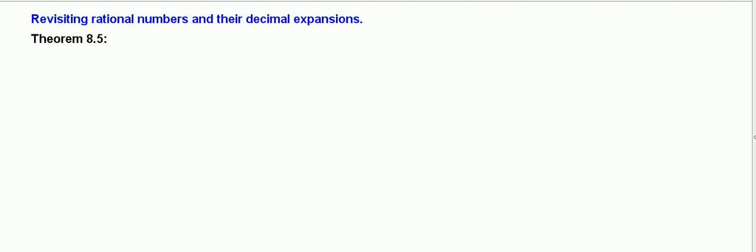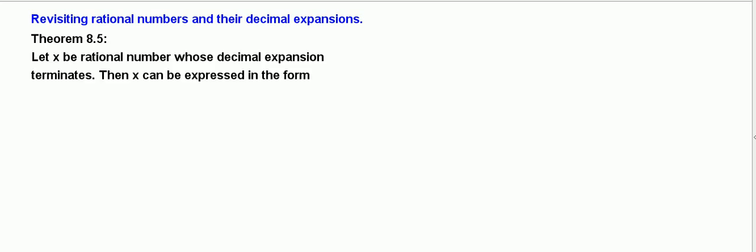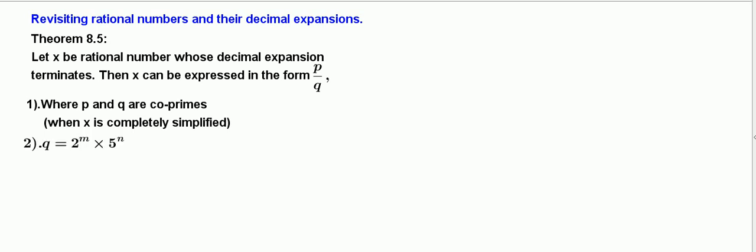Dear students, let us take revisiting rational numbers and their decimal expansions. Theorem 8.5: Let x be a rational number whose decimal expansion terminates. Then x can be expressed in the form p/q where p and q are coprimes. When x is completely simplified, q equals 2^m × 5^n where m and n are non-negative integers, that is, they are whole numbers.